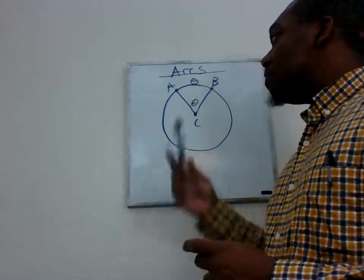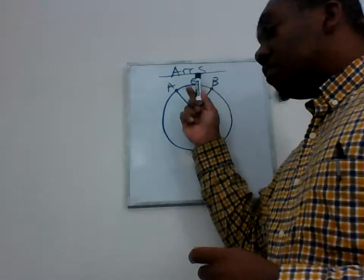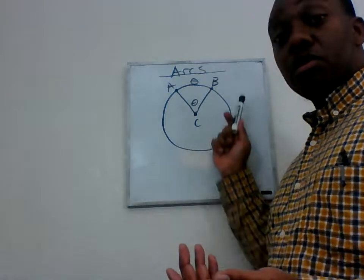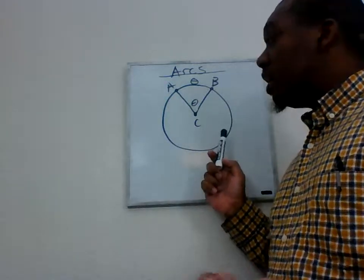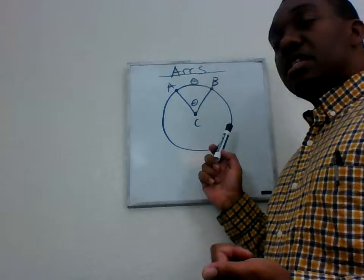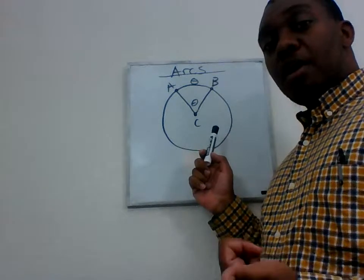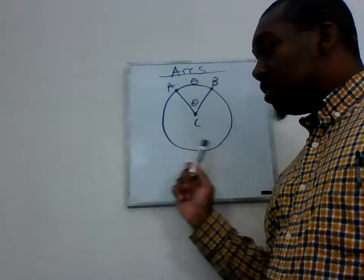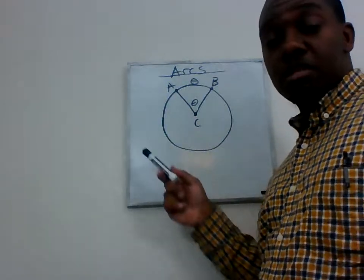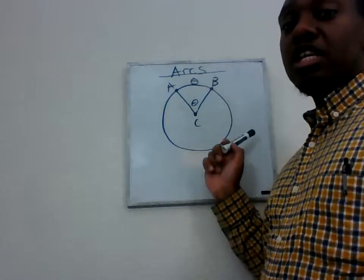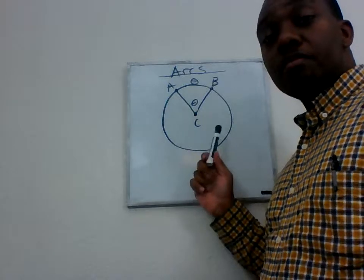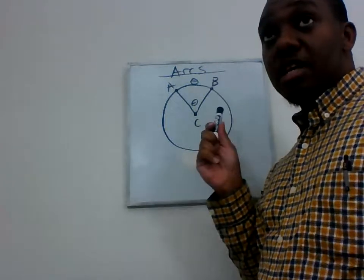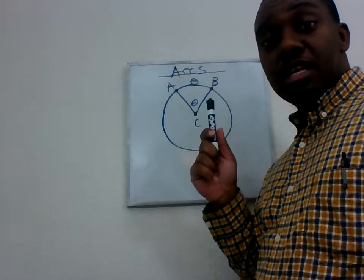As we saw before, the circumference is the distance around the whole circle. The whole circle is an arc, and we found that the circumference is 2 times pi times r. The 2π comes from the angle measurement of the circle — 360 degrees in full, or 2π in radians.